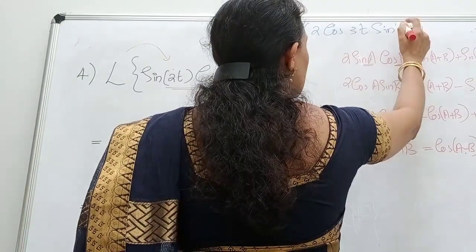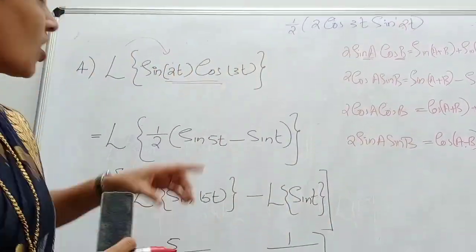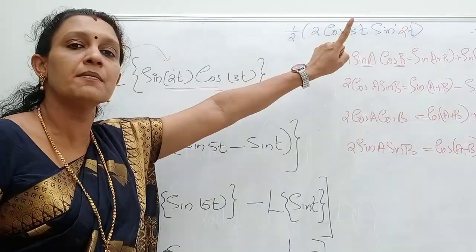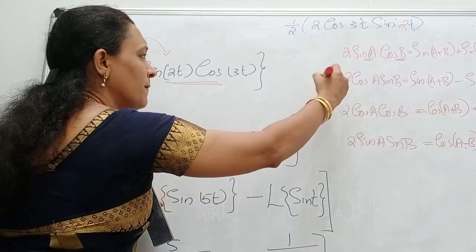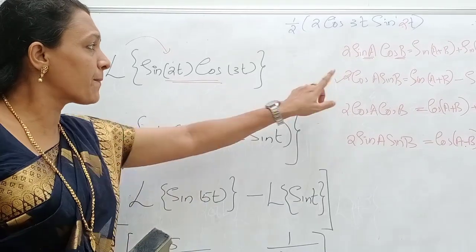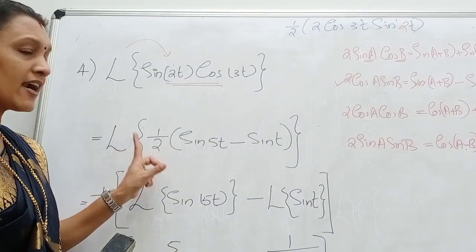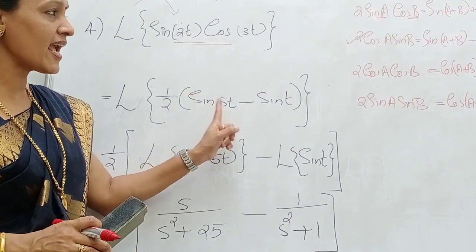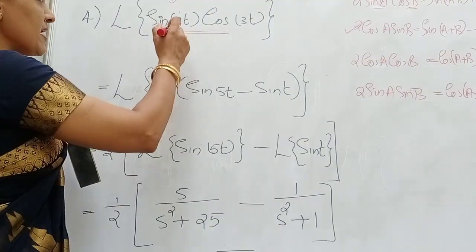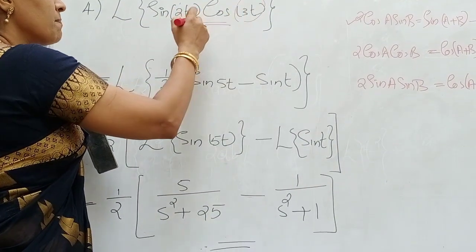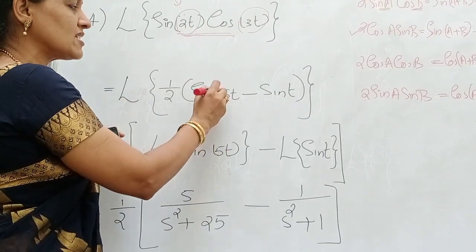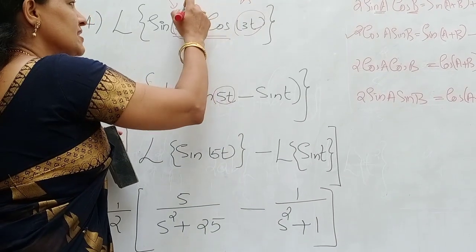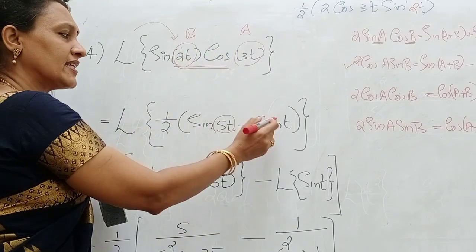I wrote this as 1 by 2 into 2 cos 3T sin 2T. This is of the form 2 cos A sin B, so by using the second formula, the product can be converted to 1 by 2 into sine A plus B. A means 3T, B is 2T, so sine A plus B means sine 5T, minus sine A minus B — that is 3T minus 2T — which is sine T.